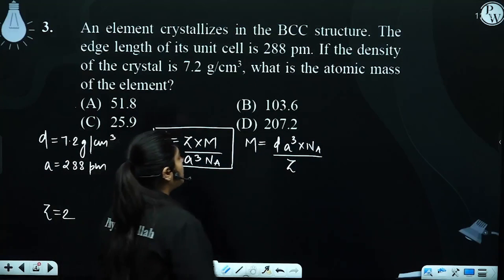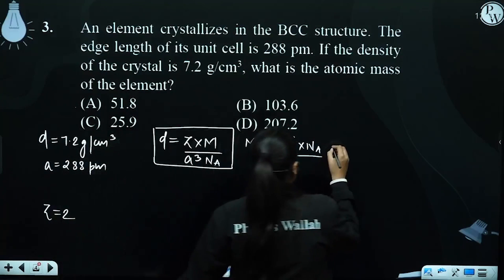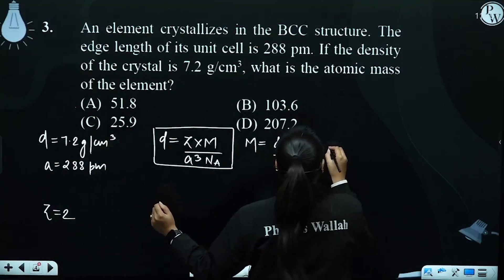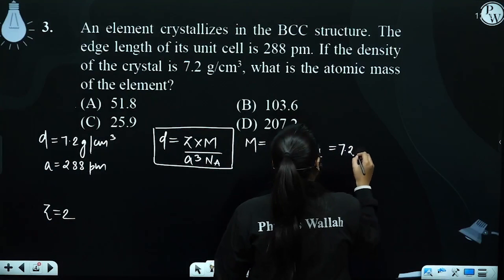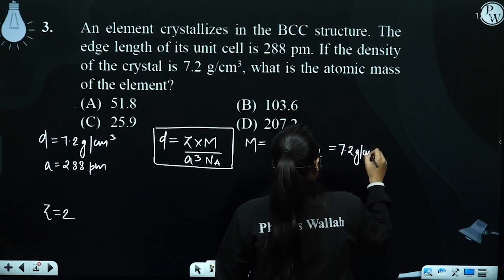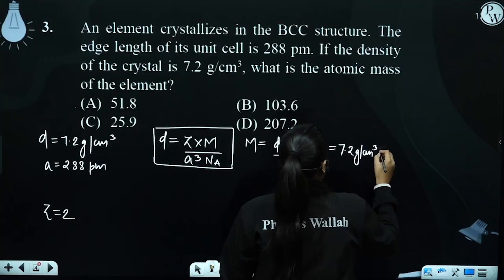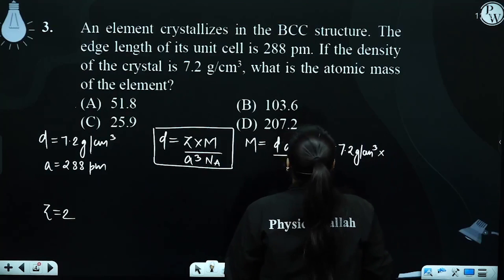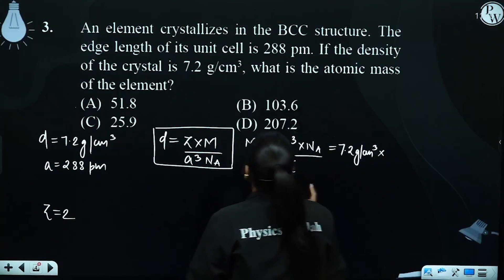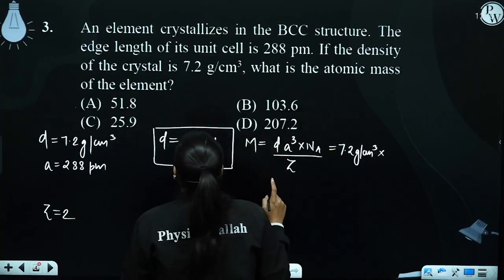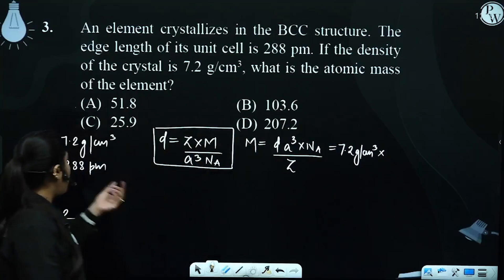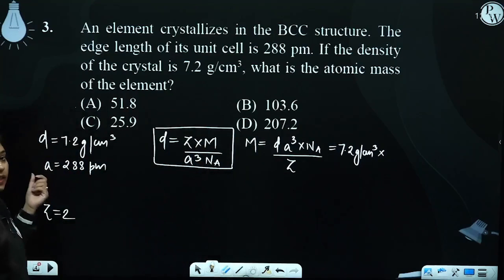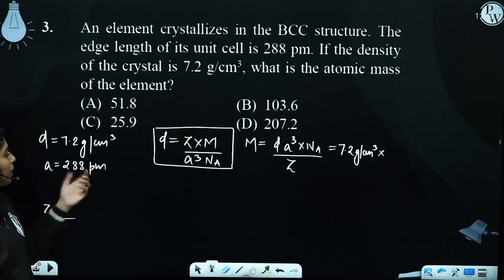Now let's put values here. Density is 7.2 gram per centimeter cube. The edge length A is given as 288 picometers. We need to find atomic mass.